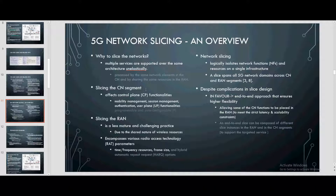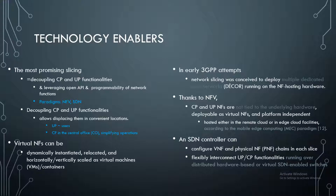RAN slicing also encompasses 5G NR access and radio access technology (RAT) parameters like time and frequency resources, frame size, and HARQ options. Network slicing logically isolates network functions (NFs) and resources on a single infrastructure, spanning all 5G network domains across CN and RAN segments. Complications in slice design favor an approach that ensures hyper-flexibility, allowing some CN functions to be placed in the RAN to meet strict latency constraints. The most promising slicing approach decouples CP and UP functionalities, leveraging open APIs and programmability of network functions, which allows placing the UP near users and the CP in the core.